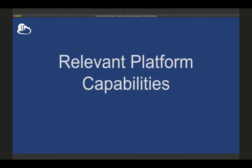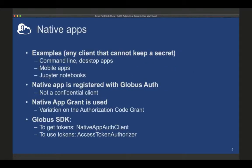Let's talk about what Globus has to enable these types of out-of-band data movement capabilities for automation. One of the key aspects to this is the concept of a native application. Most of you are familiar with your iPhone or other Android devices — these are applications that you install from the app store that you then log in with Google or some other credentials. One aspect about them is that the application itself cannot be trusted to have a secret deployed with it.